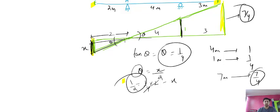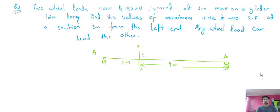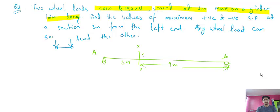The second numerical says: two wheel loads of 50 kN and 150 kN, spaced 2 meters apart, move on a girder 12 meters long. We need to find the maximum positive and negative shear force at a section 3 meters from the left-hand end. Either the 50 kN or the 150 kN may be ahead, so we check both cases.